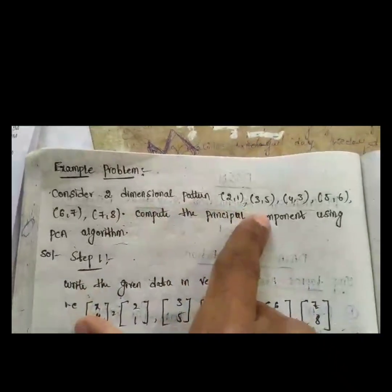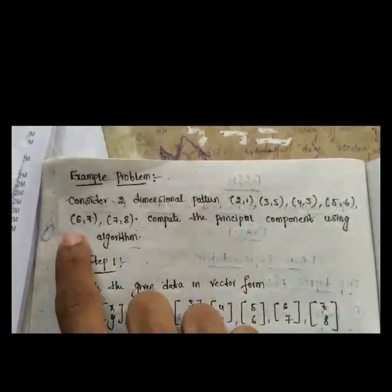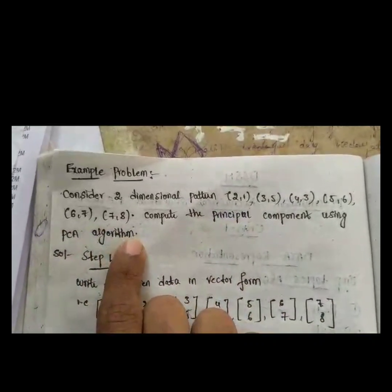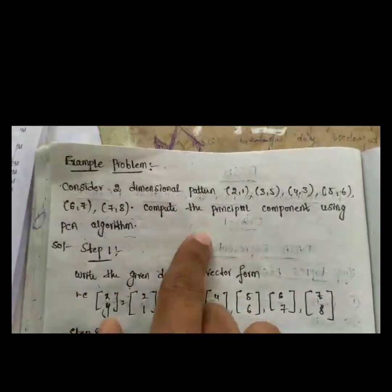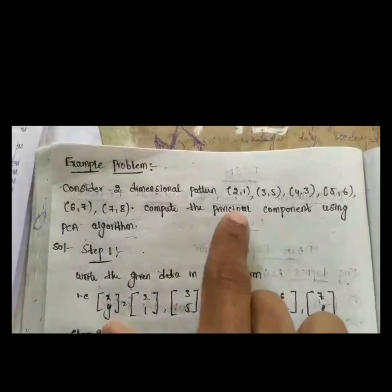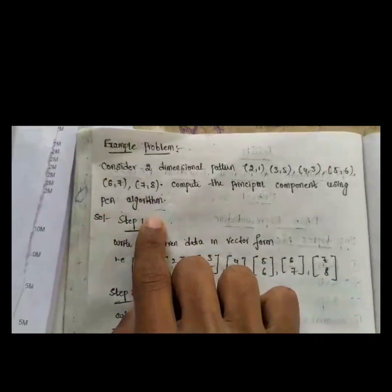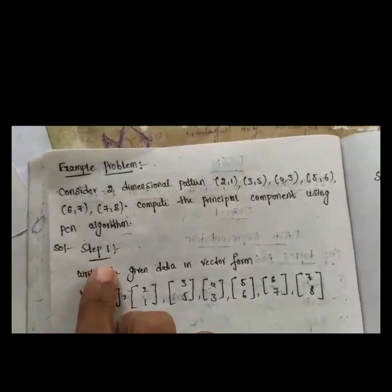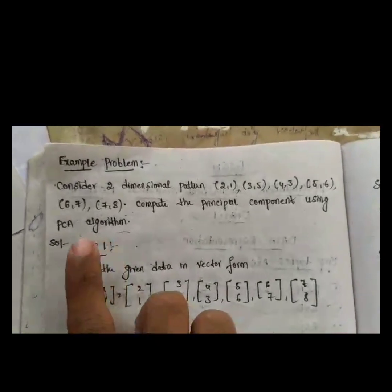Let us consider an example problem. Given data: consider two-dimensional patterns — (2,1), (3,5), (4,3), (5,6), (6,7), (7,8). Compute the principal components using the PCA algorithm. This is a simple one; we can solve it in a straightforward way.